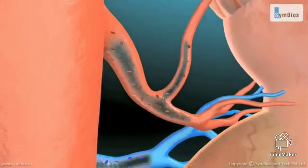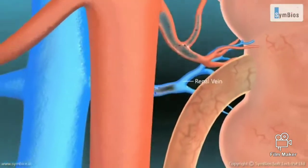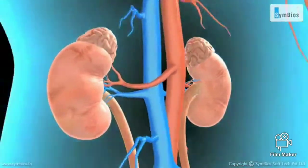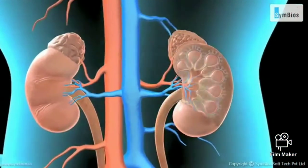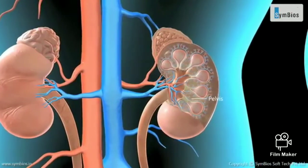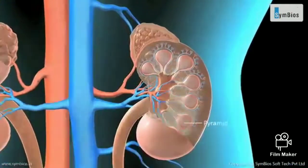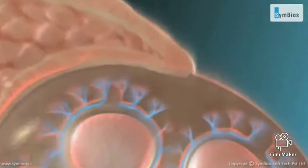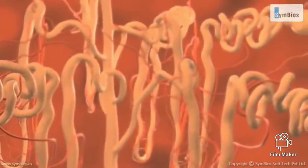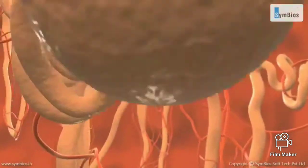The filtered blood leaves the kidney through the renal vein. In the cross-section of a kidney, we can see the cortex, pelvis, and pyramid regions. There are about one million nephrons present in each kidney, where the actual filtration of blood takes place.